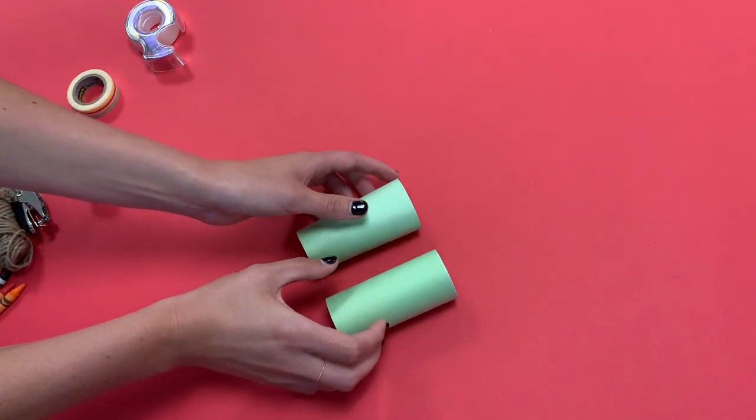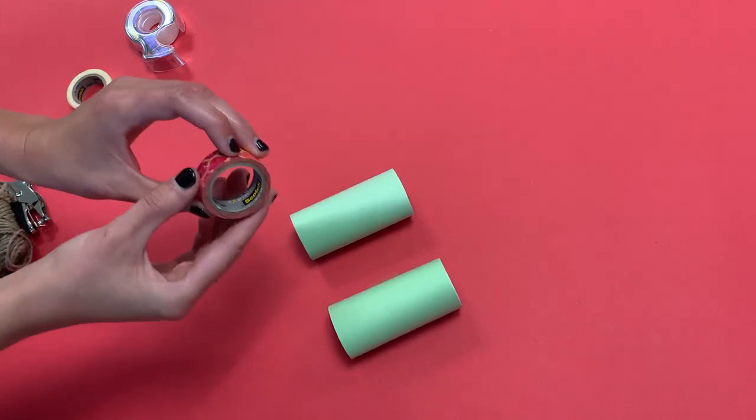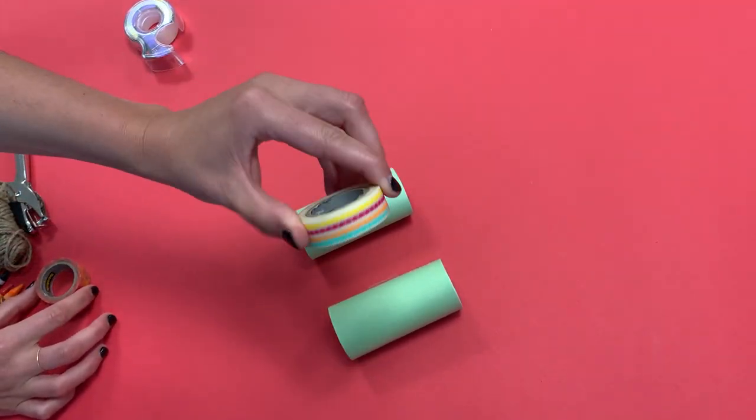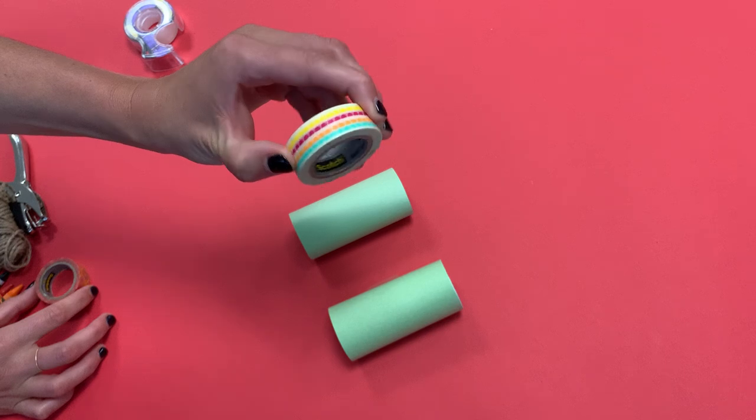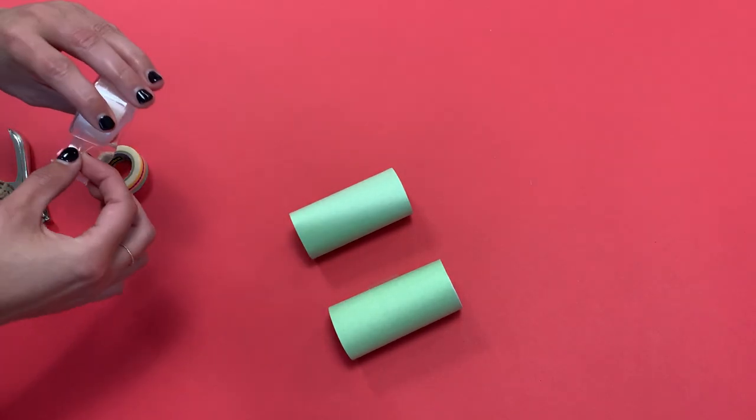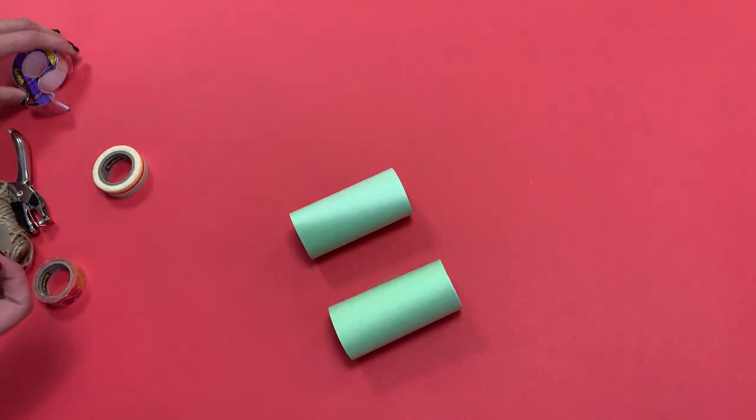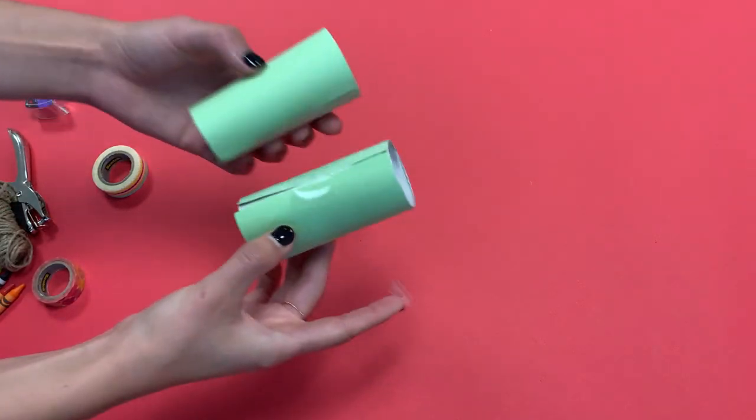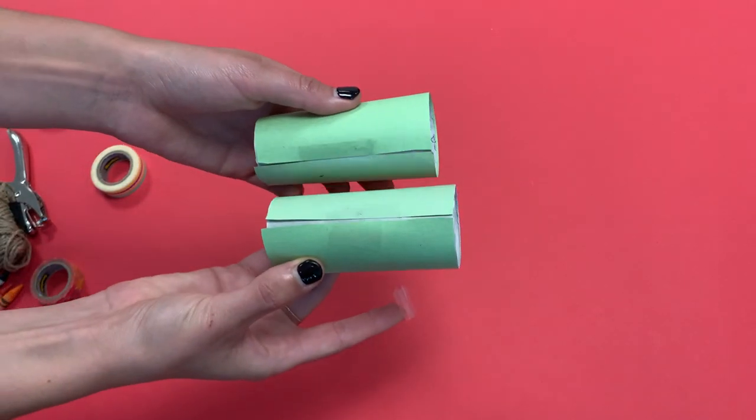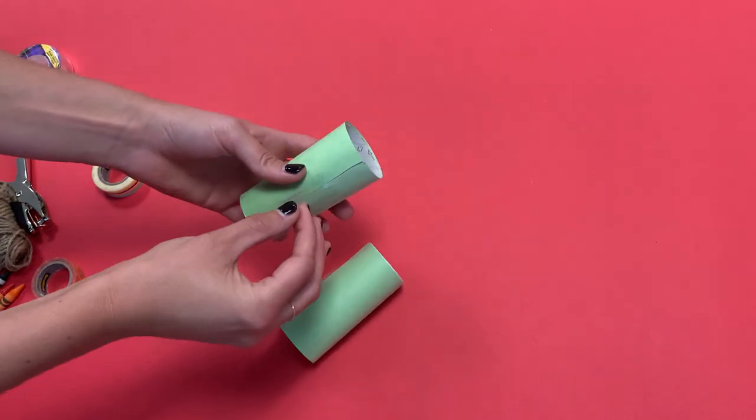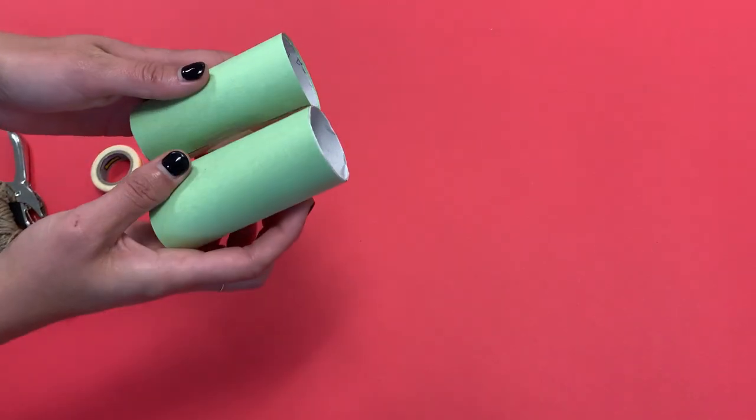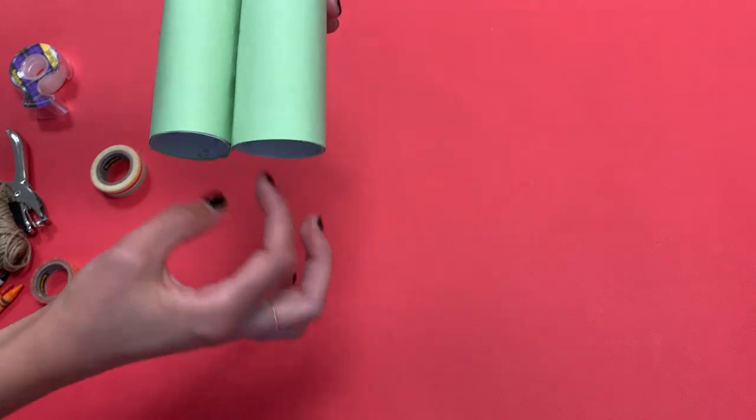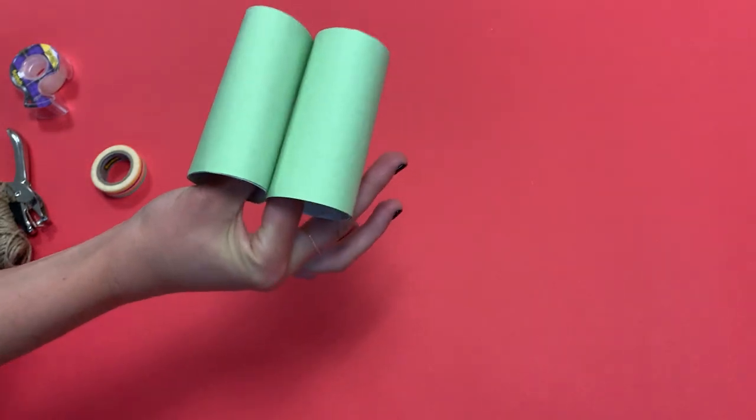The next thing we're going to do is take our washi tape and tape it across. I'm going to go with this design here. Really cool lots of little triangles and it's a little bit easier if you either glue or use tape or double-sided tape to tape them together beforehand so they don't roll away. And I actually like to tape them on the seams here just so we can hide the seams. Perfect. So my binoculars, we're already seeing the shape of the binoculars.